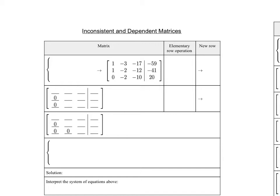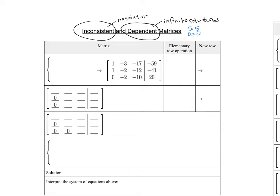We're going to continue working on our matrices, but sometimes a couple of weird things will happen. We've seen this before when we were solving our systems, and they gave us inconsistent and dependent systems. Inconsistent means there was no solution to that system, and dependent means there were going to be infinite solutions. The infinite solutions happened when we ended with a true statement like 5 equals 5 or 0 equals 0, and no solutions happened when we had something like 0 equals 5 or 7 equals 2 — something that just was not true.